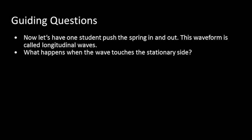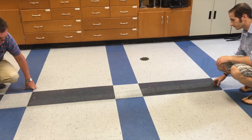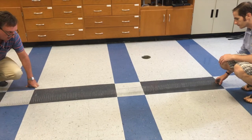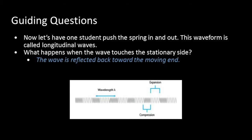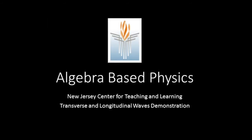Now let's have one student push the spring in and out. This waveform is called longitudinal waves. What happens when the wave touches the stationary side? Well, the wave is reflected back toward the moving end.